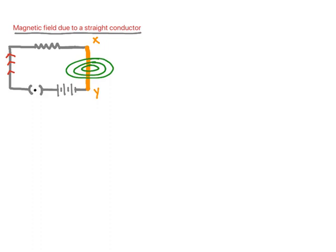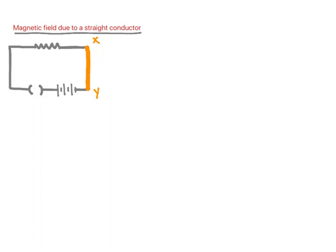The minute the current stops, the magnetic field no longer exists. So this magnetic field exists only when a current is passing through XY.